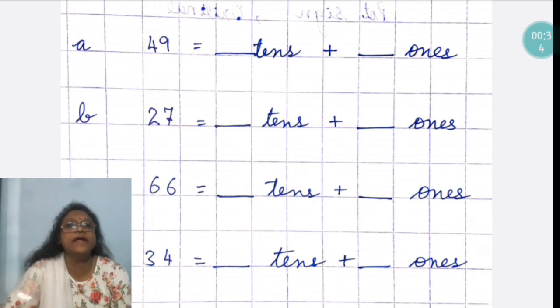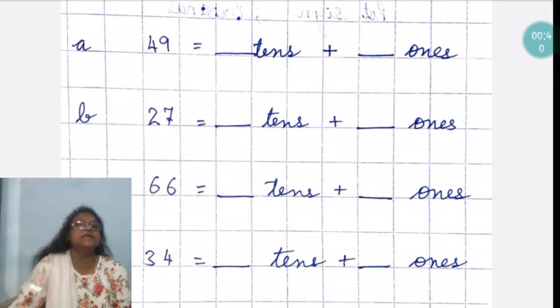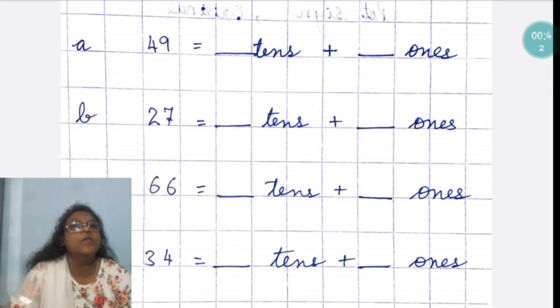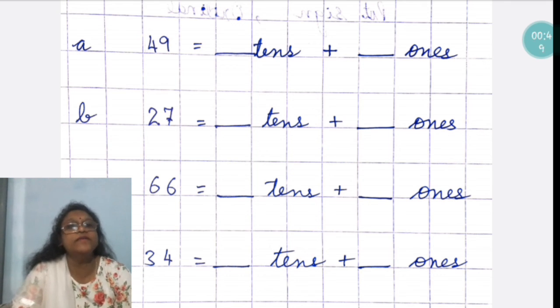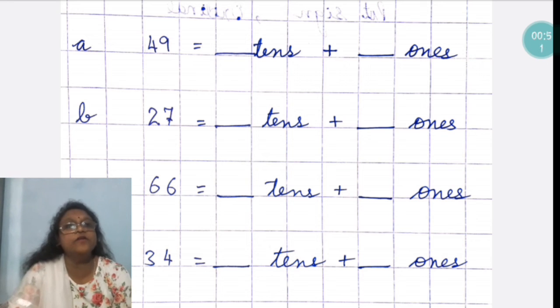You have to first write A, leave one column, then 49 equal to put dash, then write tens. Then, put plus sign, dash and then you write ones, spelling of ones. In this way, you have to write in your fair notebook for the four exercises.